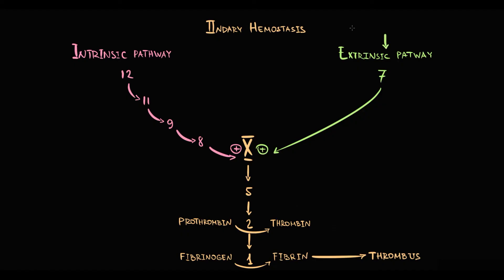To assess the extrinsic pathway, we use prothrombin time and international normalized ratio. For assessment of intrinsic pathway, we use partial thromboplastin time. We have to know that the activity of factor X and factor II, so called thrombin, is regulated by a specific molecule called antithrombin. Antithrombin regulates the activity of these two factors by inhibition.